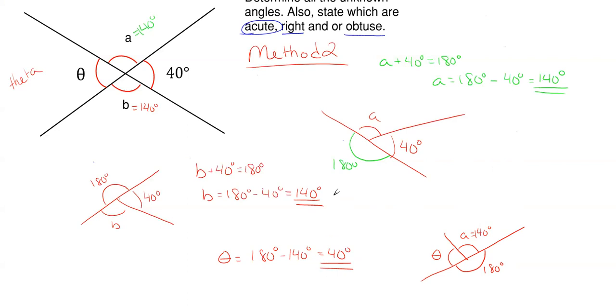So once again, determine if they're acute, right, or obtuse. Anything over 90 degrees is obtuse. So that's A and B. Anything under 90 degrees is acute, which is theta. The 40 is also an acute angle. And we have nothing equal to 90 degrees, so nothing is a right angle.